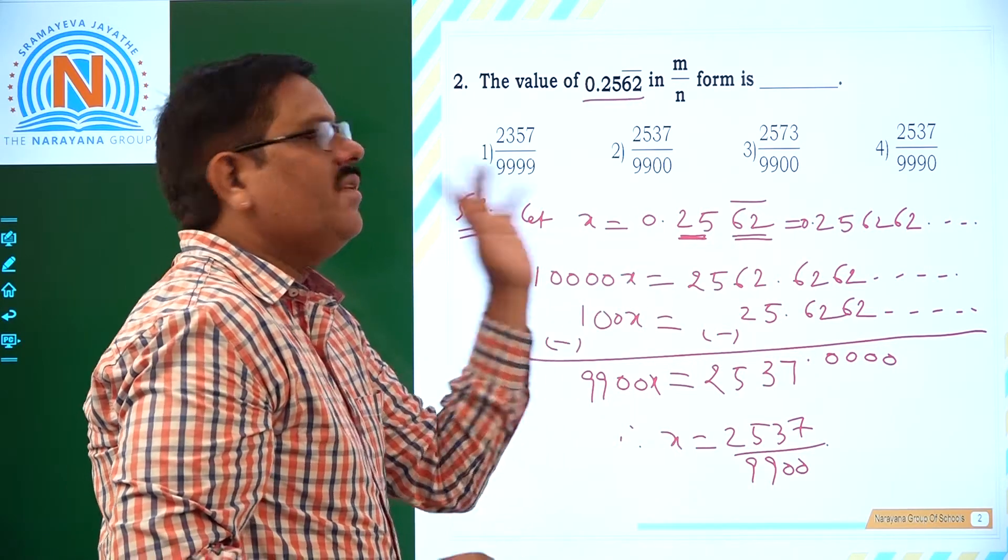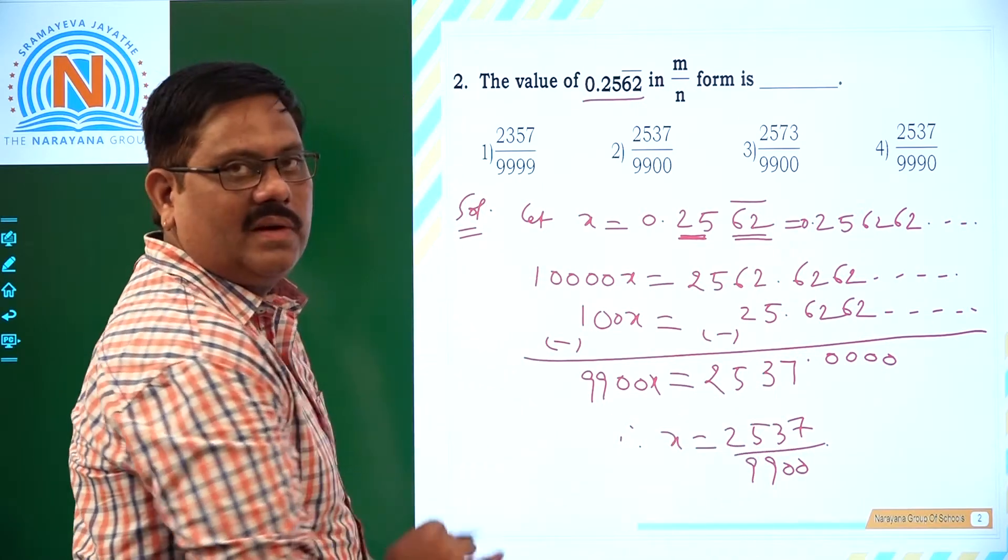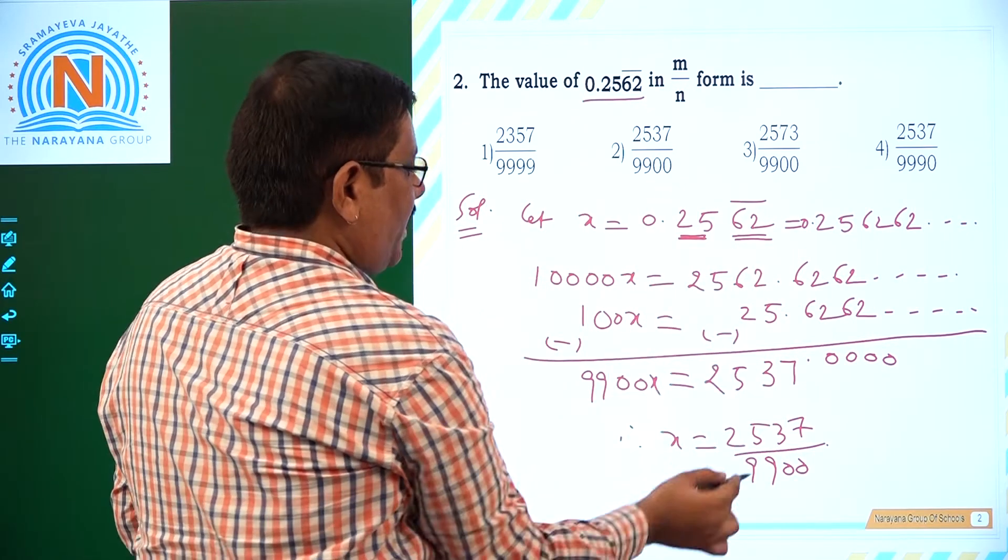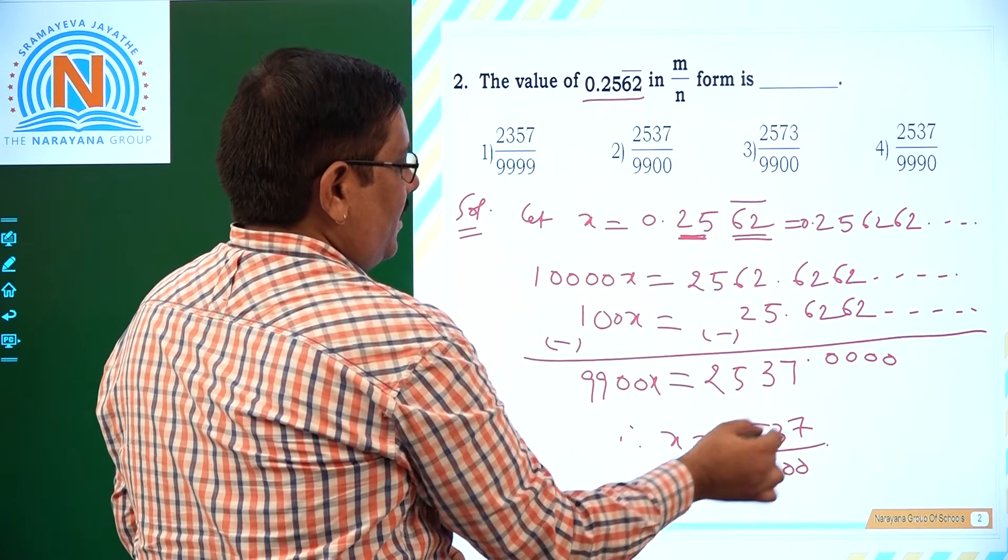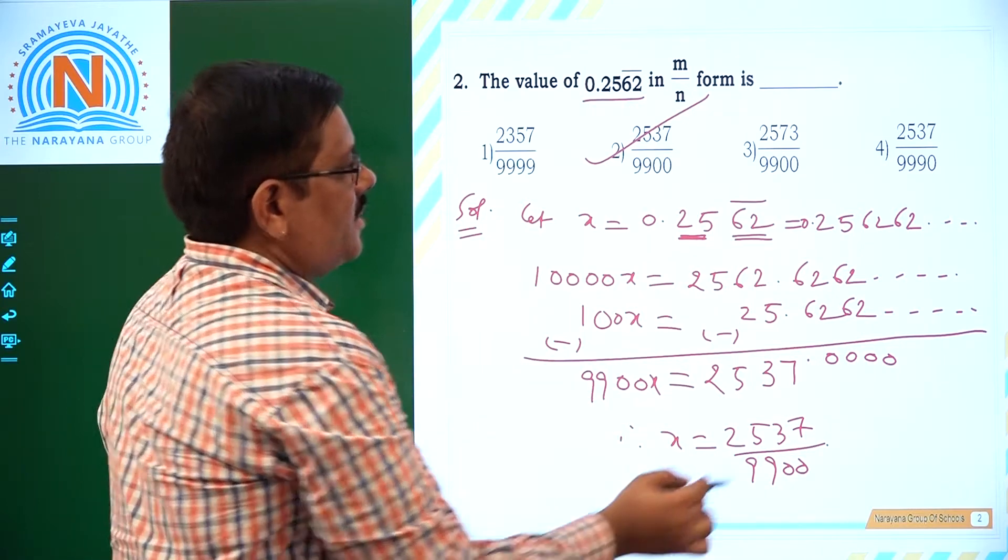9900 is in the denominator. 2537 is in the numerator. What is x here? The given decimal, 0.2562 bar. Therefore, the m by n form for the given decimal is 2537 by 9900. That is nothing but second option. Now we move to the next question.